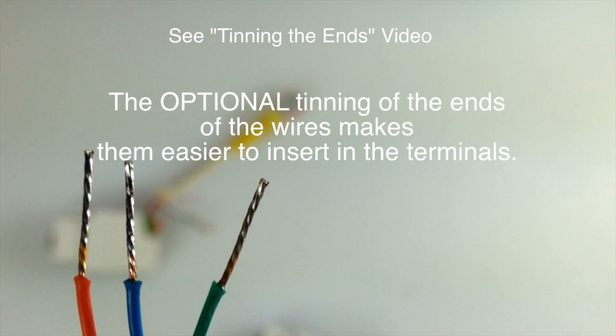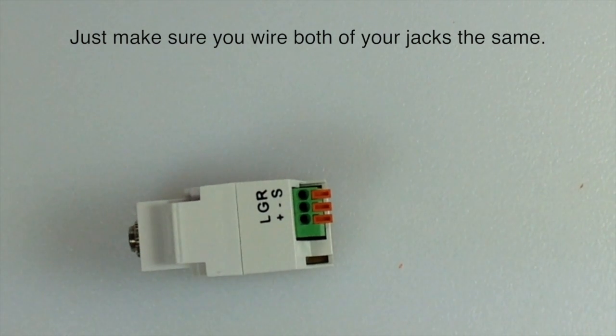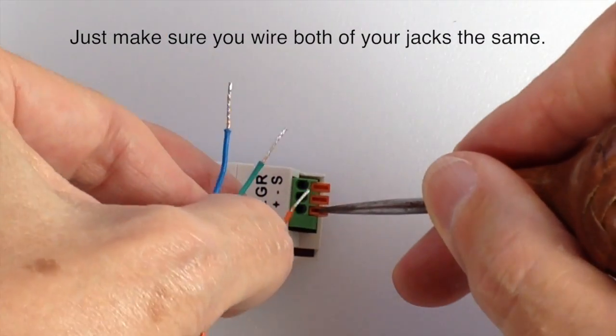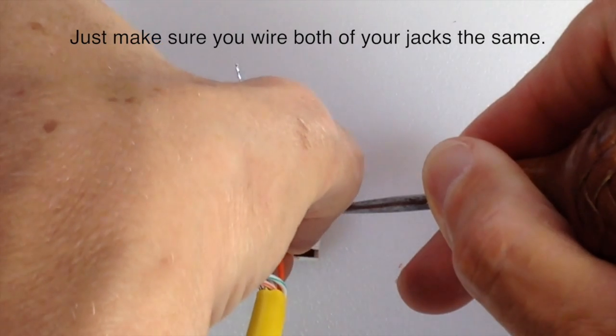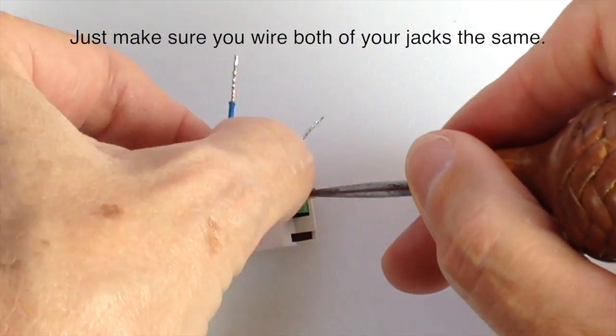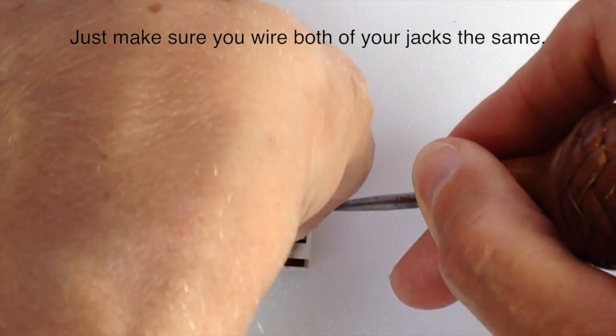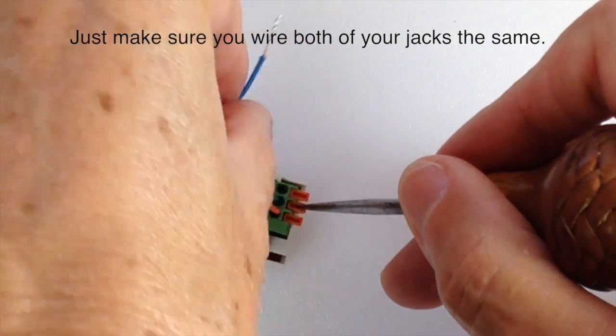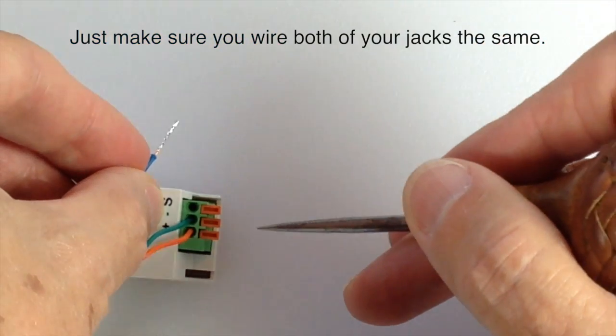Tinning the ends of the wires makes them easier to insert in the terminals. Then insert the orange wire in the terminal marked positive. Insert the green in the terminal marked negative or ground. Insert the blue wire in the terminal marked S.